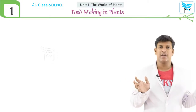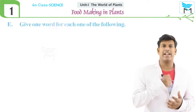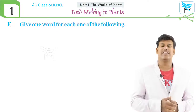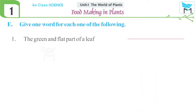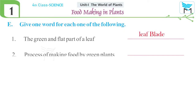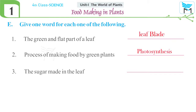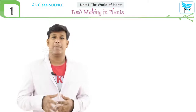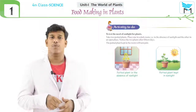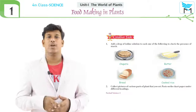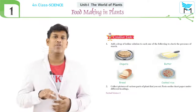Now we are going to one-word answers. First: the green and flat part of a leaf is called the leaf blade. Second: the process of making food by green plants is photosynthesis. Third: the sugar made in the leaf is known as glucose. That's all about our exercise. You still have activities, worksheets, and creative tasks to do — complete them with the help of your parents and teachers. See you in the next topic, bye!